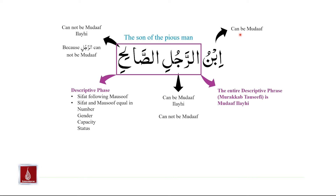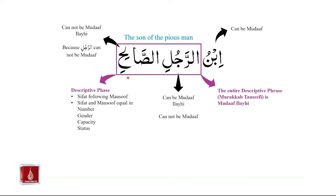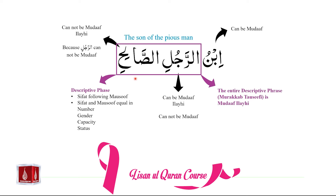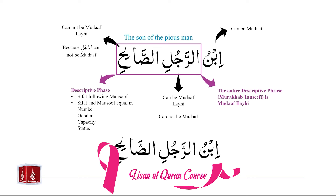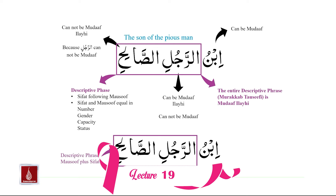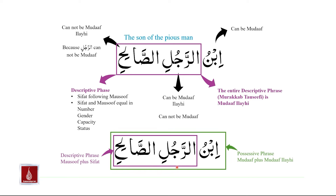The entire descriptive phrase الرجل الصالح can serve as Mudhaaf Ilai for ابن. ابن meets criteria for Mudhaaf — no Al, no Tanween. الرجل الصالح in its entirety is Majroor: الرجل is Majroor and الصالح is Majroor, so it meets criteria to be Mudhaaf Ilai. Therefore, ابن الرجل الصالح is a possessive phrase where ابن is Mudhaaf and الرجل الصالح is Mudhaaf Ilai, with الرجل as the Mosuf and الصالح as the Sifat.